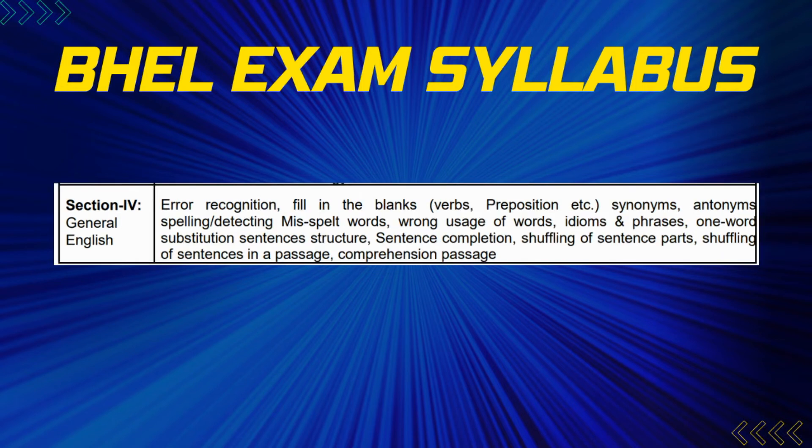Next is Section 4 — General English. Topics include: error recognition, fill in the blanks, synonyms and antonyms, spelling or detecting misspelled words, wrong usage of words, idioms and phrases, one-word substitution, sentence structure, sentence completion, shuffling of sentence parts, shuffling of sentences in a passage, and comprehension passage. That covers the English section.